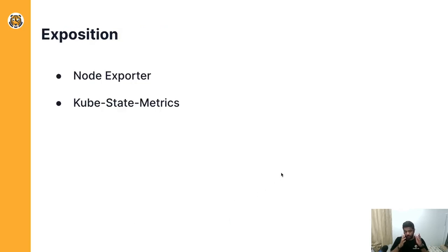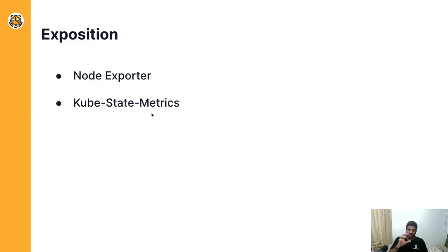Let's go layer by layer through what TOBS includes. The exposition layer extracts metrics from targeted resources. Node Exporter scrapes node metrics from all nodes in your Kubernetes cluster, and kube-state-metrics scrapes Kubernetes metrics from the kube API server, giving you an overall understanding of your cluster's state. TOBS includes both node-exporter and kube-state-metrics out of the box.